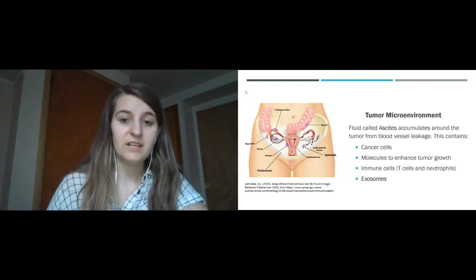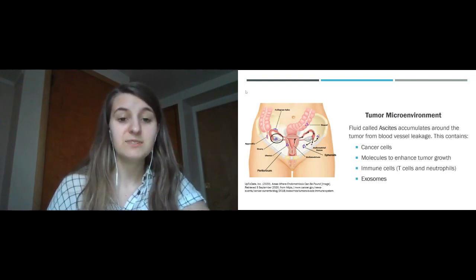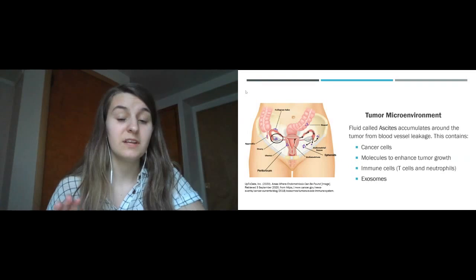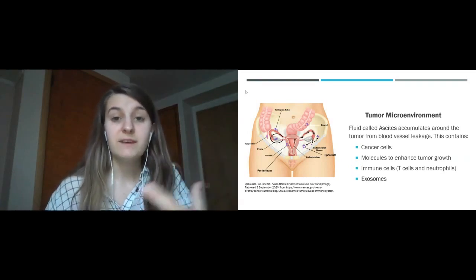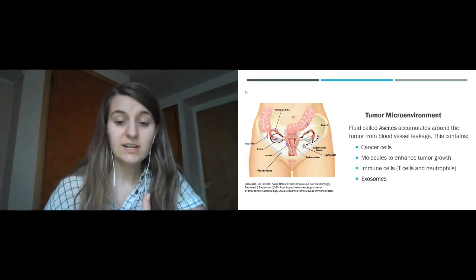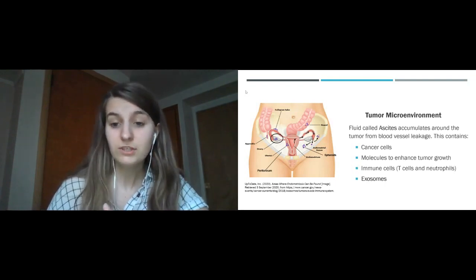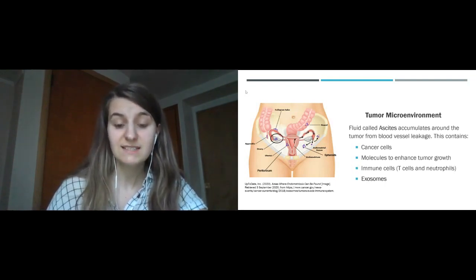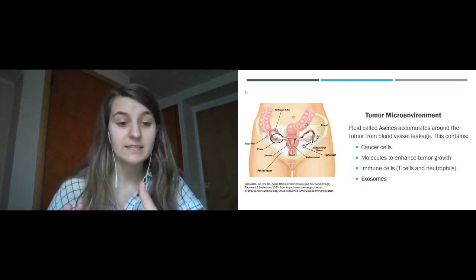One of the hallmark pathologies of EOC is that it presents with fluid called ascites accumulating around the tumor as blood vessels leak out water. So this fluid contains things like cancer cells, molecules recruited by the tumor to enhance tumor growth and metastasis, immune cells, and exosomes.